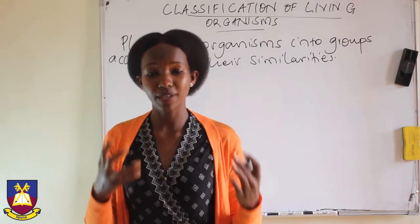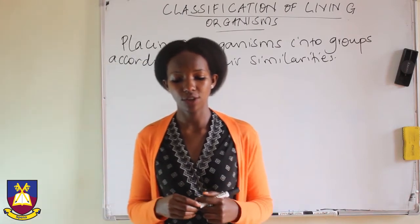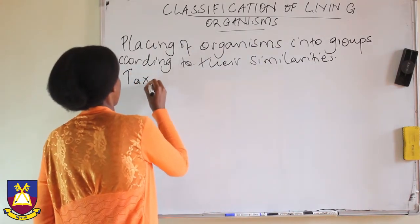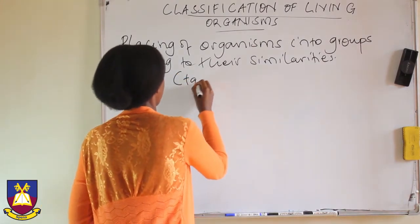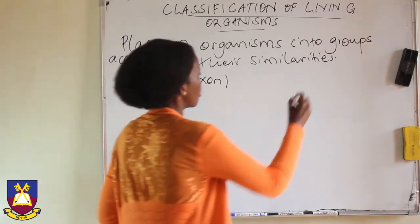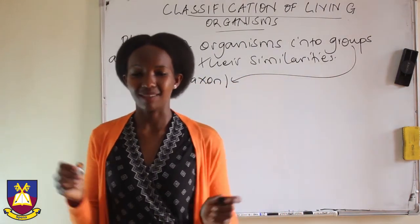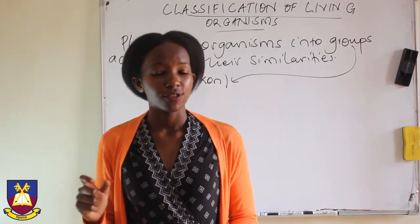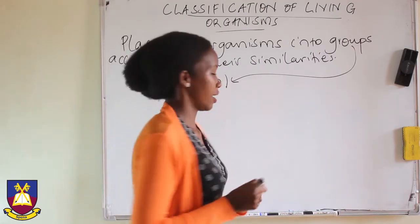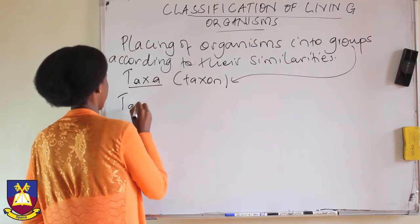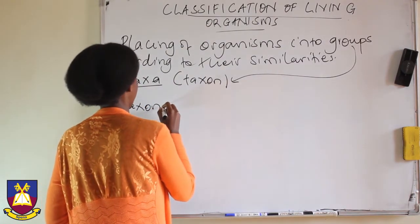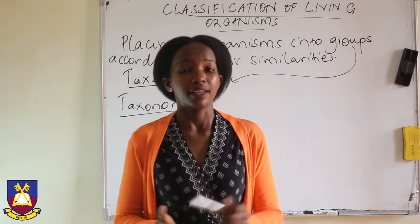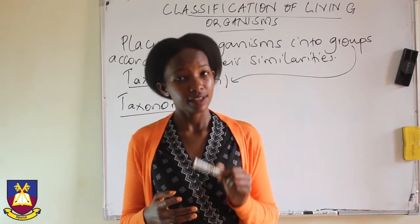It involves observing organisms, seeing their structures, and then grouping them into groups which are referred to as taxa. In singular, it's called a taxon. The branch of biology that concerns itself with classifying organisms is referred to as taxonomy. Taxonomy is the science that deals with identifying, naming, and classifying organisms.